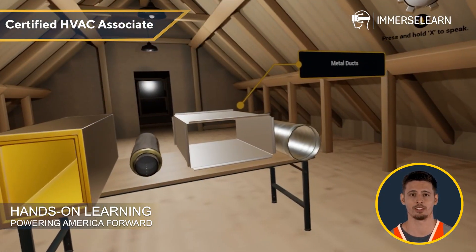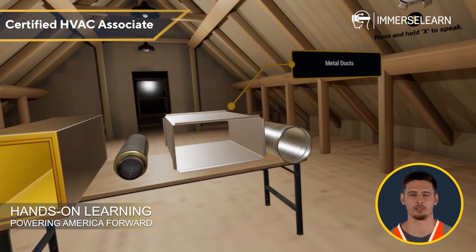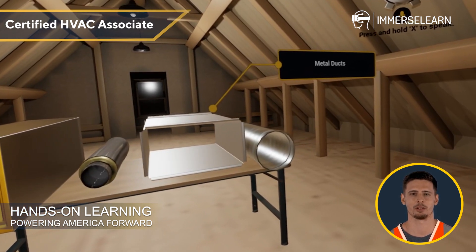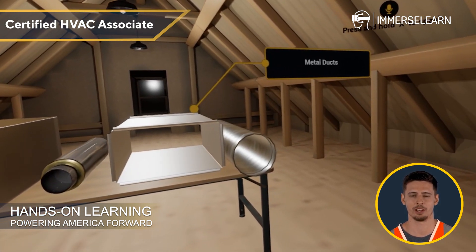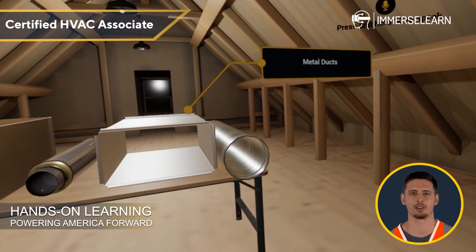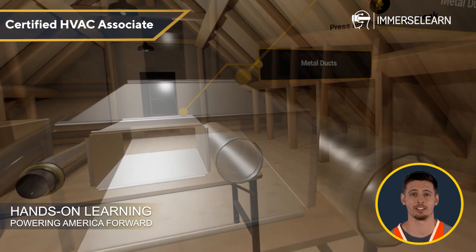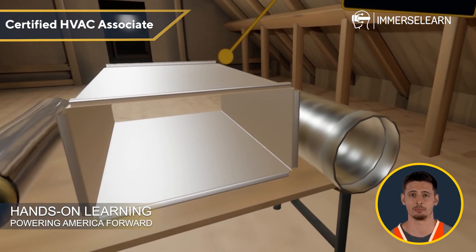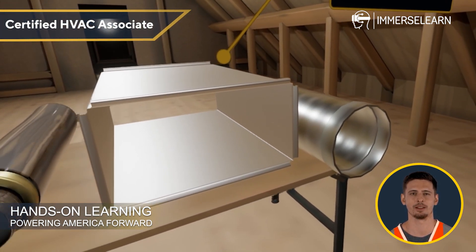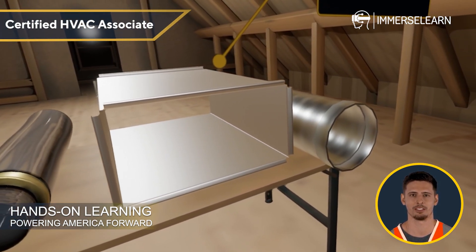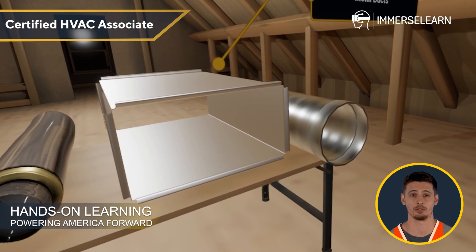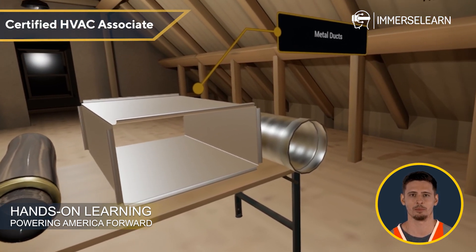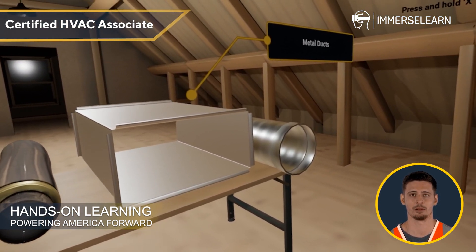Take metal ductwork, for example. It's strong, fire-resistant, and built to last. You'll find it in two main shapes: round, which optimizes airflow, and rectangular, which fits neatly into tight spaces. Made from galvanized steel or aluminum, metal ducts are a solid choice, but must be properly sealed to prevent leaks.